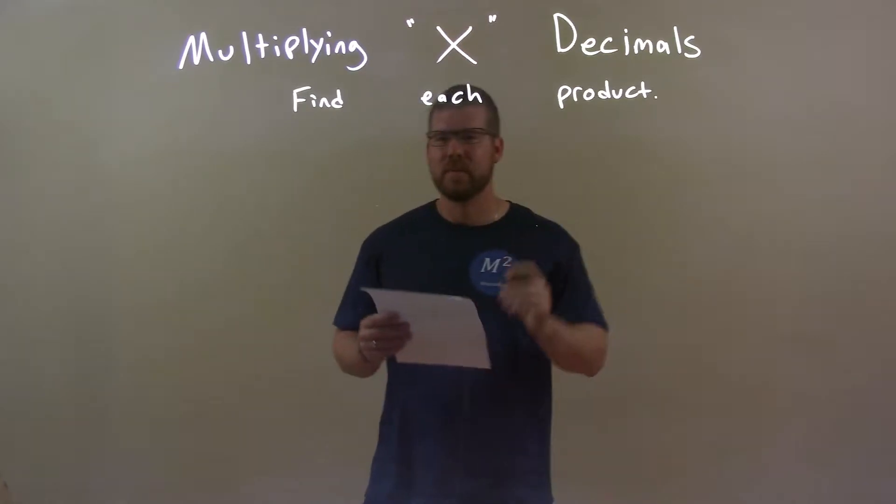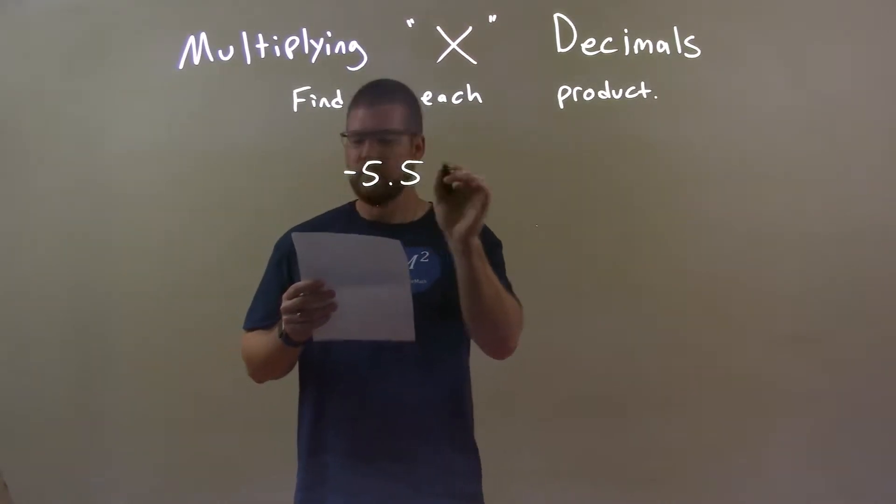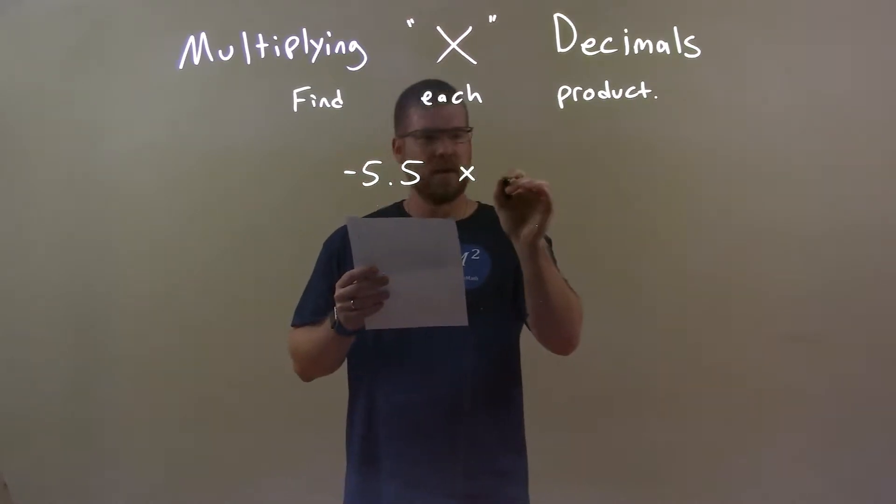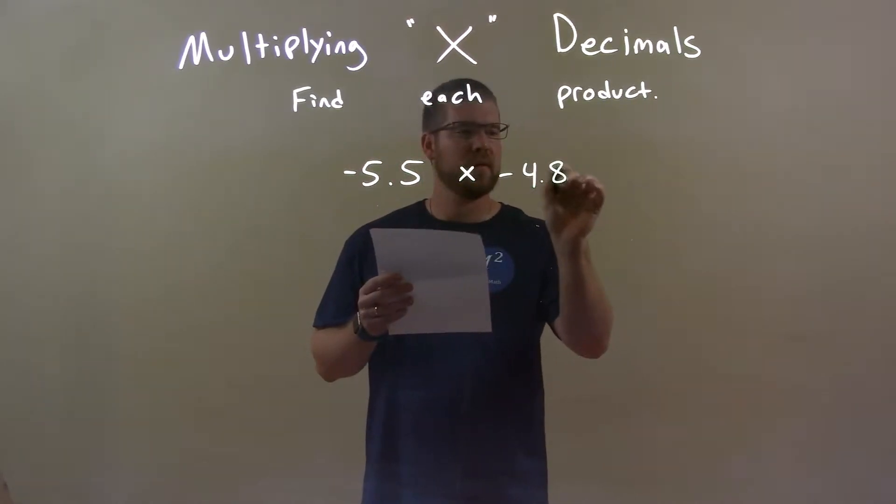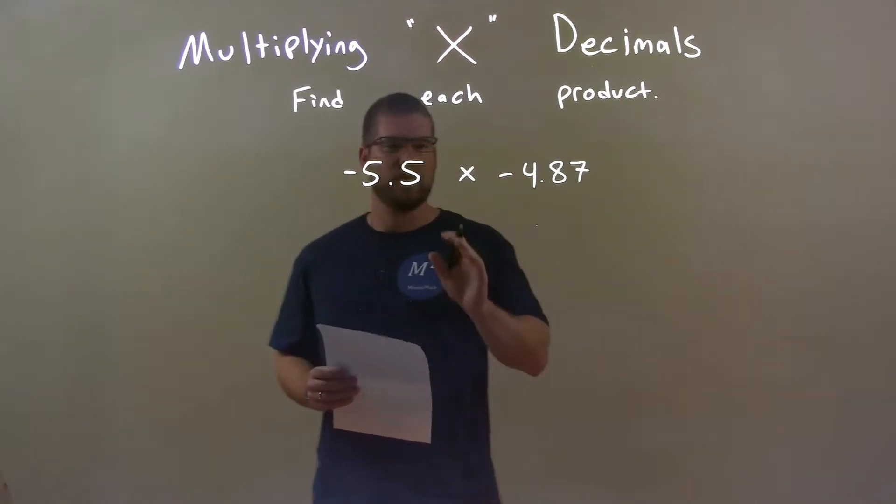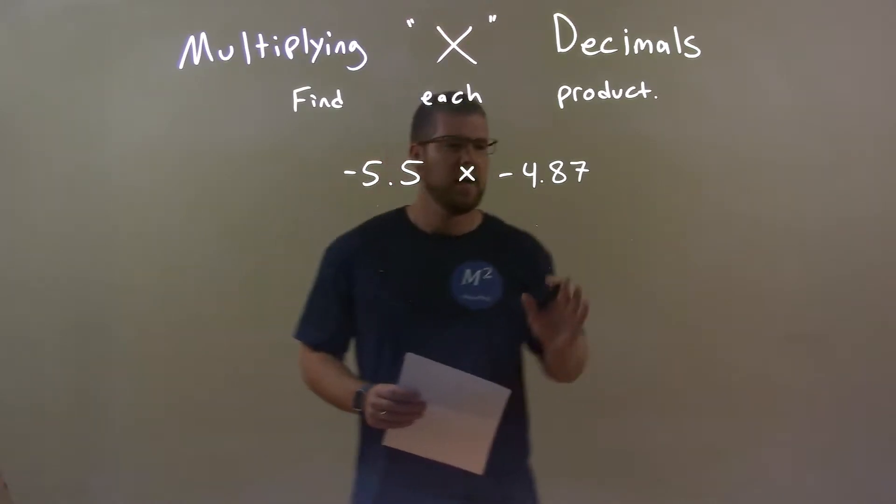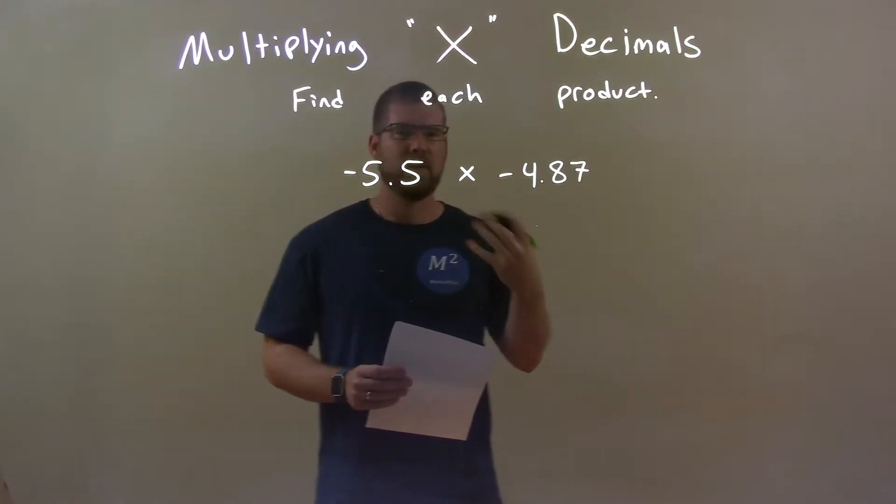If I was given these decimals, negative 5.5 times a negative 4.87, the one thing I want to do with these two is ignore the negatives right now. I just deal with the positive numbers and I'll deal with the negatives later.